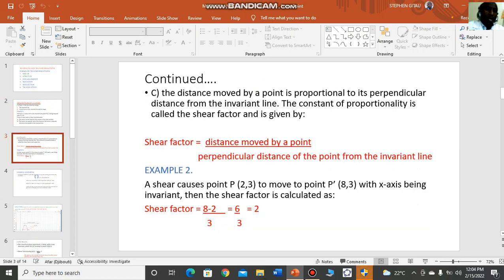The distance moved by a point is proportional to its perpendicular distance from the invariant line. The constant of proportionality is called the shear factor and is given by: shear factor equals distance moved by a point divided by the perpendicular distance of the point from the invariant line.